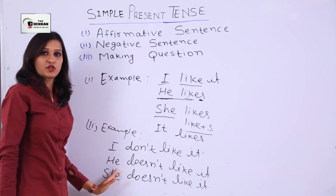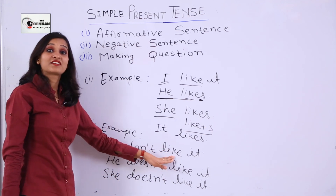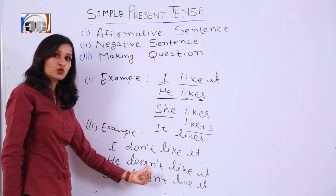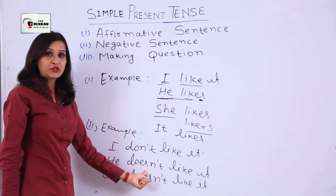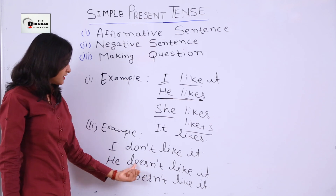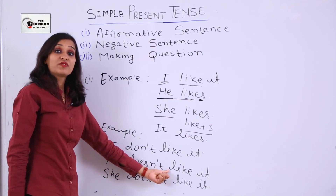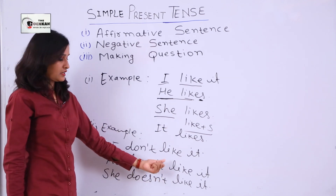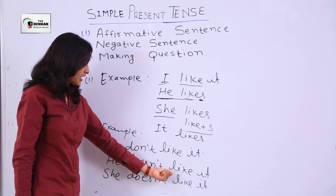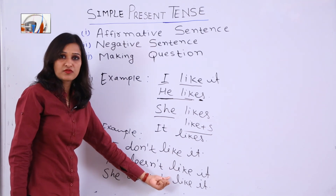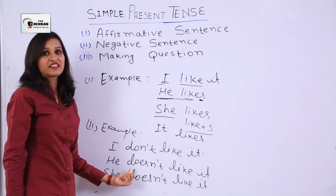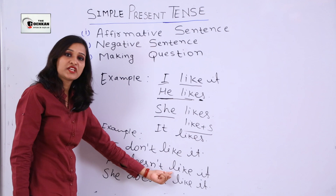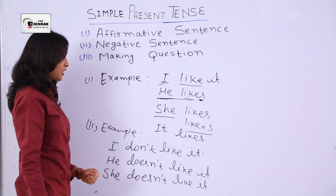For example: 'I don't like,' 'he does not like it,' or 'she does not like it.' You might ask: why didn't we use -s on 'like' even though we used 'he'? The reason is we already used -s in the helping verb — 'does.' So we do not add -s again to the main verb 'like.' 'Do' and 'does' are helping verbs, while 'like' is the main verb or action verb. Since we used 'does,' there's no need to add -s to the main verb.